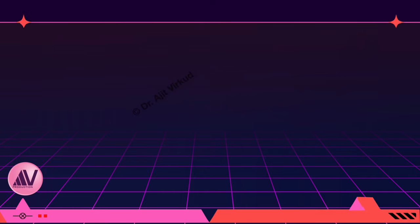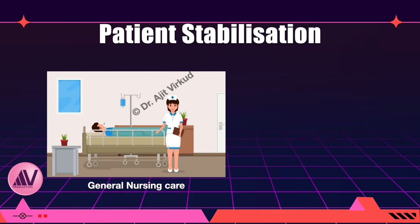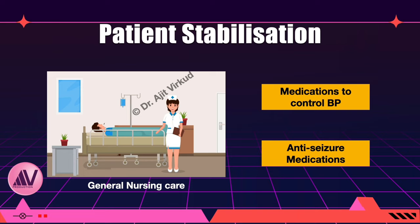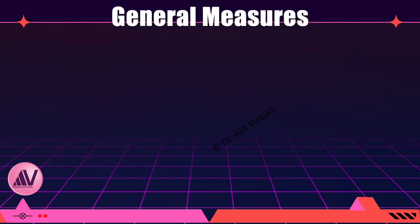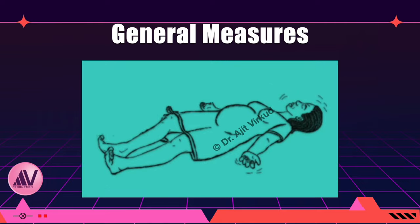Stabilizing the patient entails two parts: first, general nursing care, and then medications to stabilize the blood pressure and stop further seizures — both equally important. In this part one I will discuss the general aspects of stabilization. First of all, place the patient supine on a low cot and perform nasopharyngeal suction to keep the airway clean.